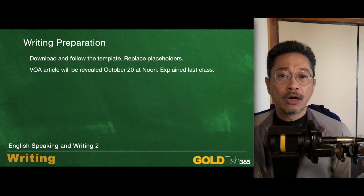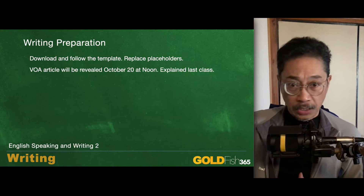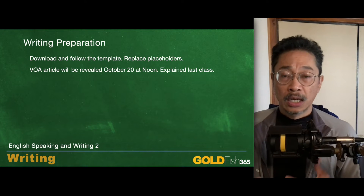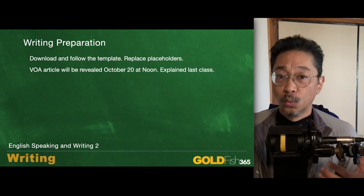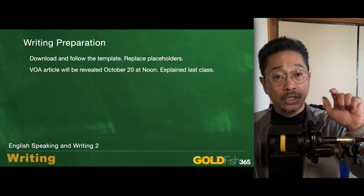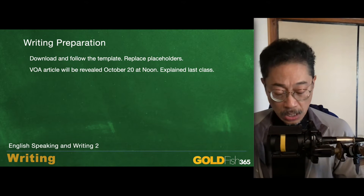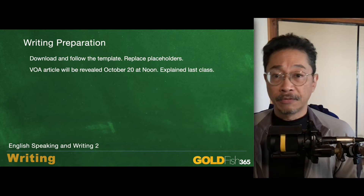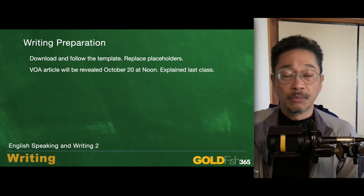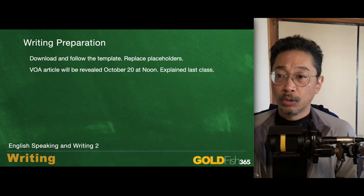The VOA article will be revealed tomorrow at noon. I explained to you last week in class in Japanese how to use it. Click the link, read the article, and take advantage of the fact that it is online. You can double-click words and look them up using your dictionary. You can also use the MP3 player to have something read to you. If you didn't get that explanation, watch the videos from the last class.